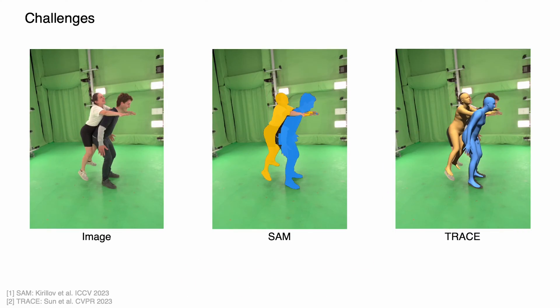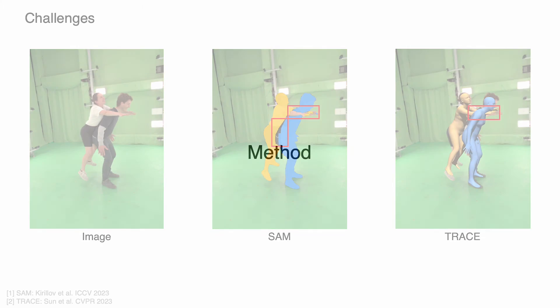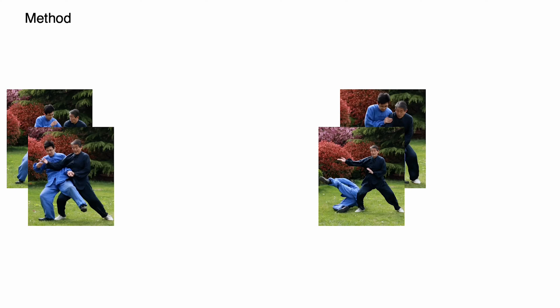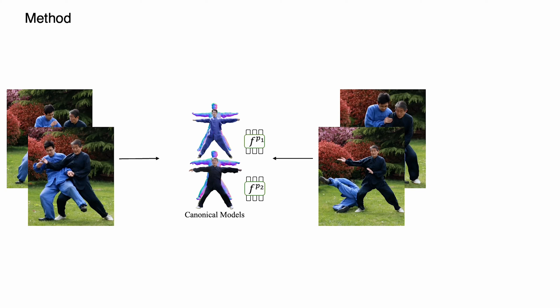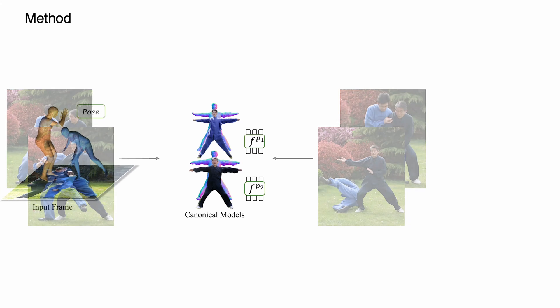Existing methods, for instance segmentation and multi-person pose estimation, are often inaccurate and implausible, which severely impairs the reconstruction problem. To address these challenges, we propose to fuse incomplete RGB observations for each subject into a single consistent human representation defined via a neural implicit field in canonical space.